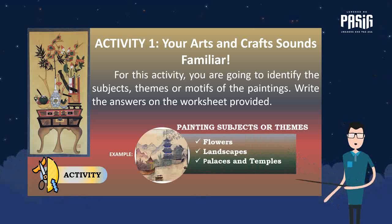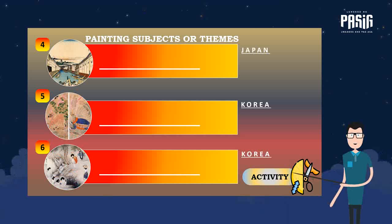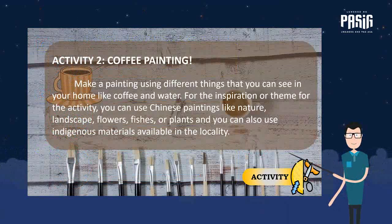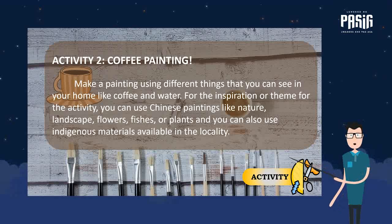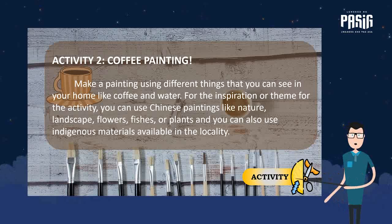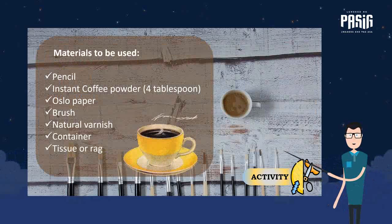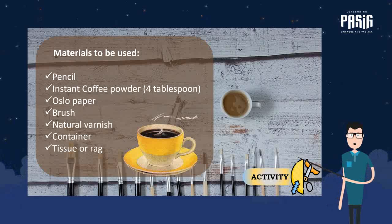This is the sample answer for the activity. For our second activity, we are going to make a painting using coffee that we usually have in our house. For the inspiration or theme, you can use Chinese painting subjects like nature, landscape, flowers, fishes, or plants, and you can also use indigenous materials available in the locality. The materials needed are: pencil, 4 tablespoons of instant coffee powder, Oslo paper, brush, natural varnish, container, and tissue.